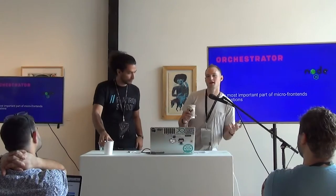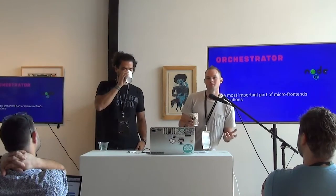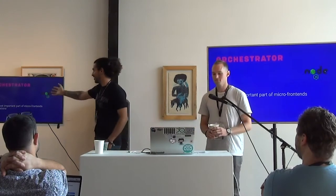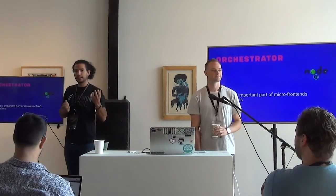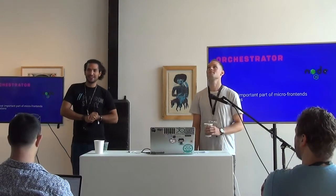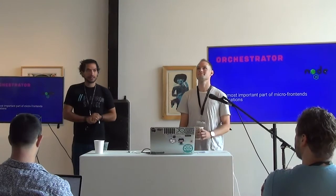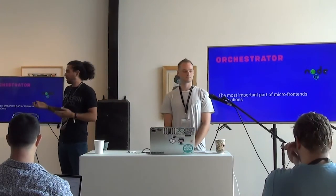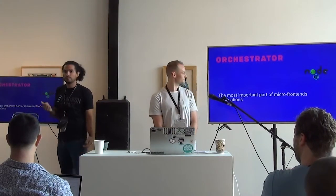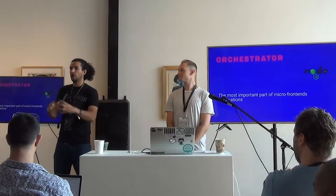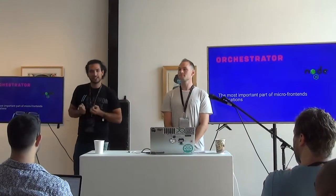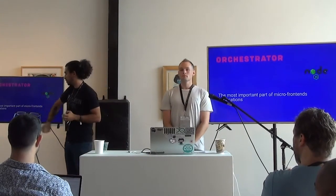We have these different applications on the same DOM — how exactly did they get there? The orchestrator! I cannot emphasize this enough. Please spend some time thinking about the orchestrator. It's the stitching layer — it gets all the applications and puts them all into one. That's a crucial thing you have to think about if you want to do micro frontends: how is that going to work? The orchestrator is the most important part of micro frontend applications.